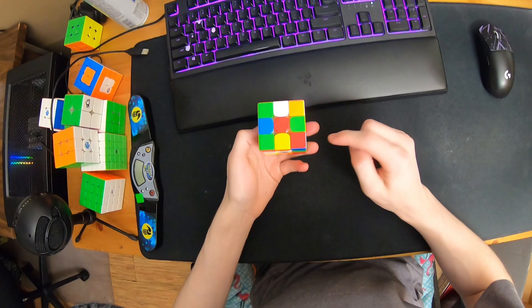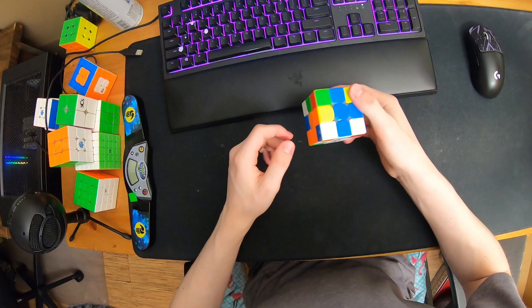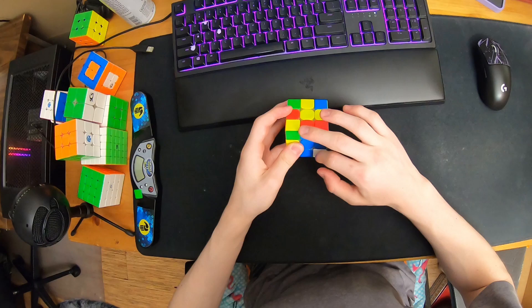I'm also going to be checking this and this. If I do L D prime R prime F, you see this moved here and then this after aligning the cross will be here. A better solution could have been to sledge.